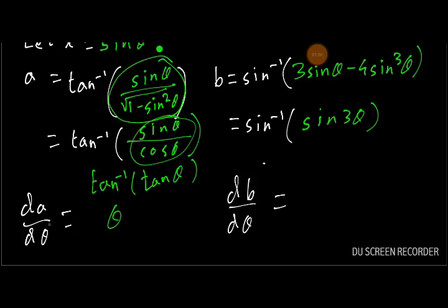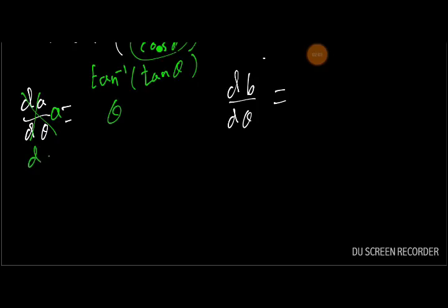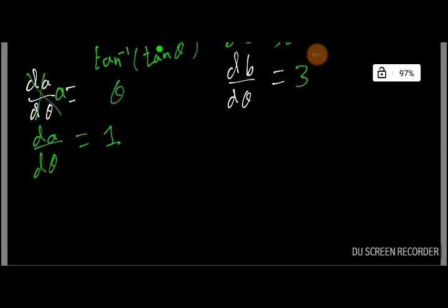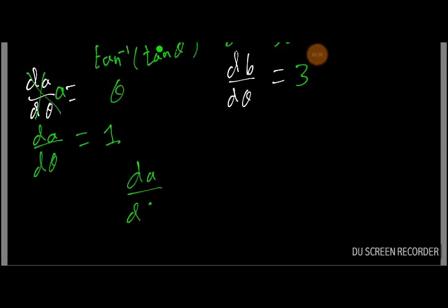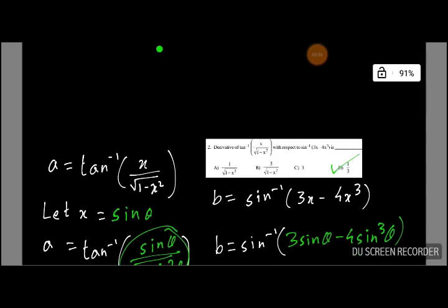Differentiating A with respect to θ gives dA/dθ = 1. Differentiating B with respect to θ gives dB/dθ = 3. So dA/dB = (dA/dθ)/(dB/dθ) = 1/3. The answer is D, that is 1/3.